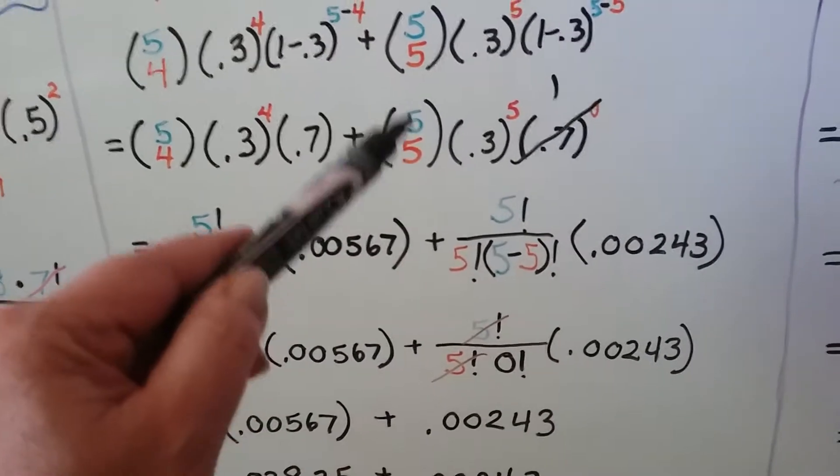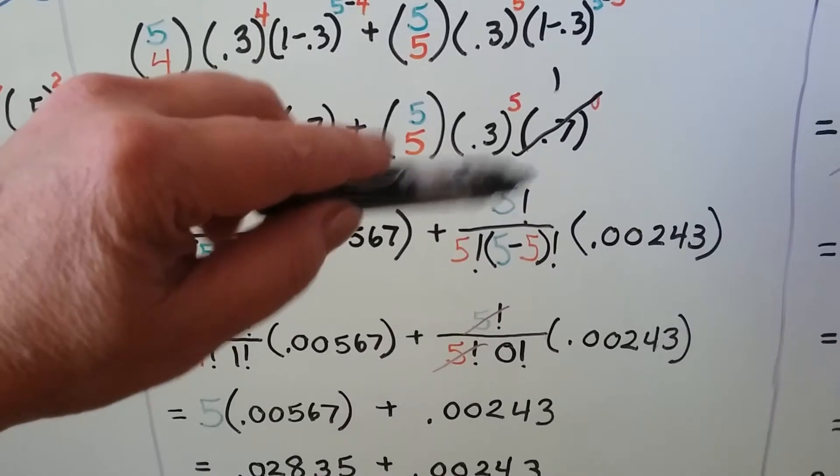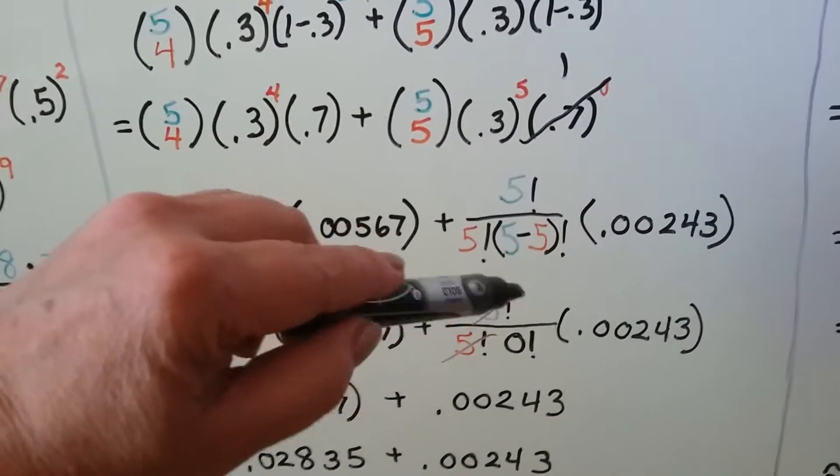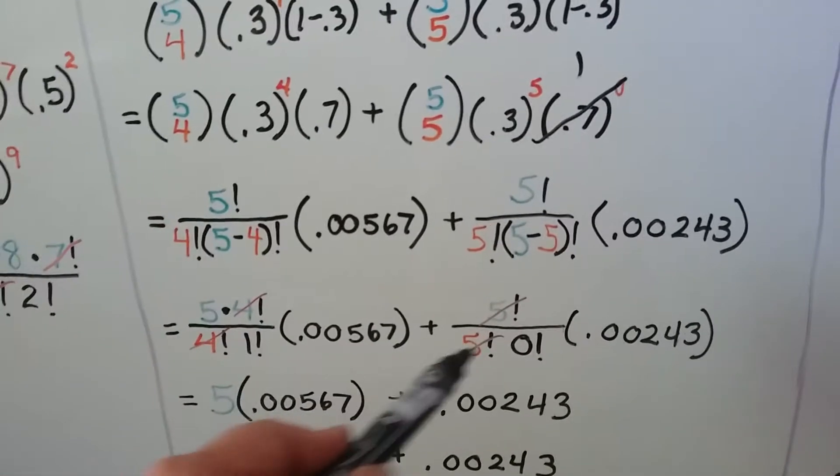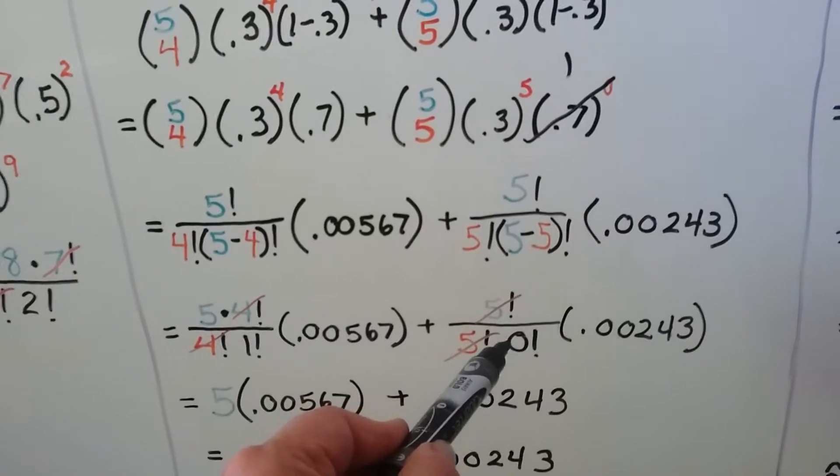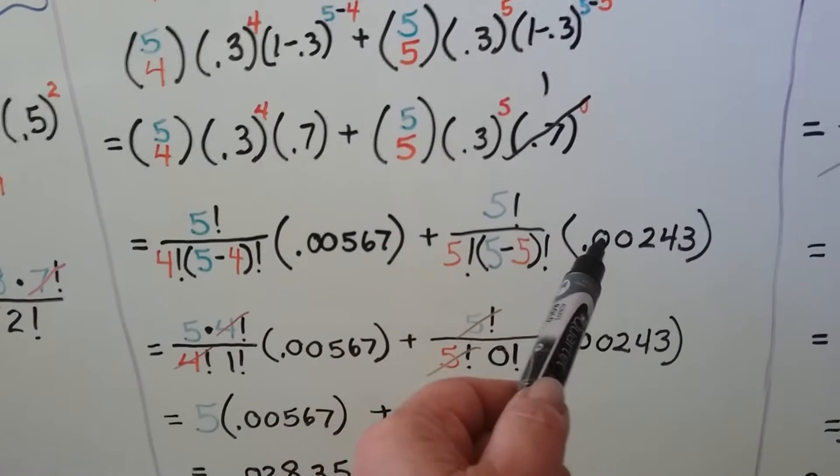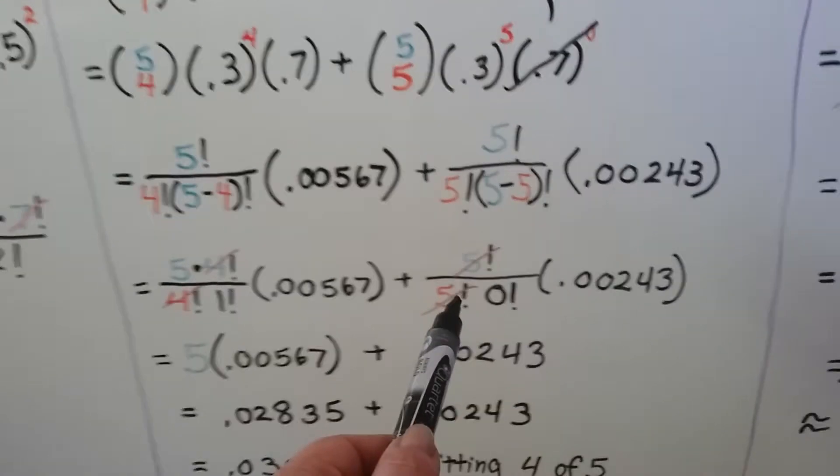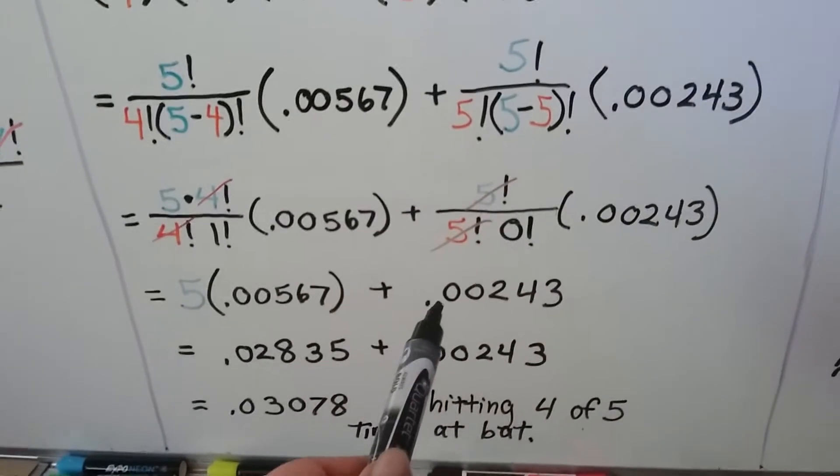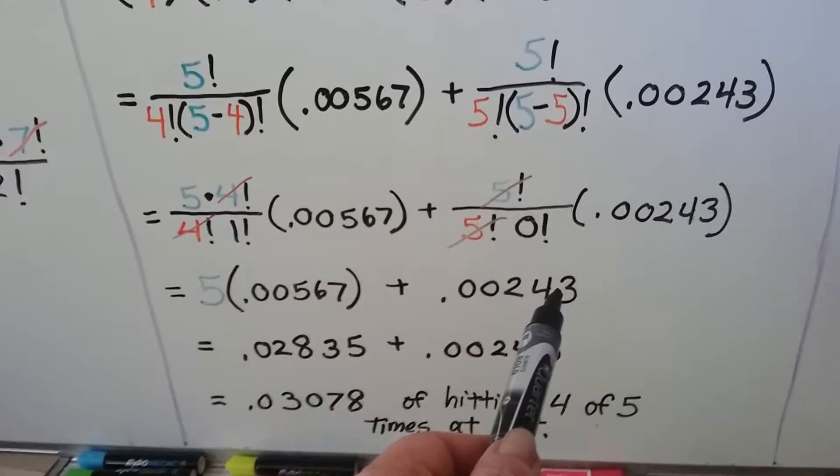We have our plus sign. Here we have five choose five. These two factorials are going to cancel out. And then we're going to have zero factorial. Zero factorial equals one. So that's just a one. So 0.3 to the fifth power is 0.00243. So it's just going to be 0.00243 on this side of the plus sign.